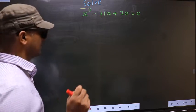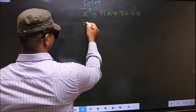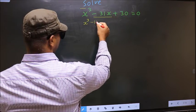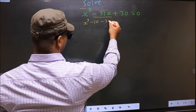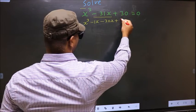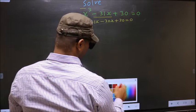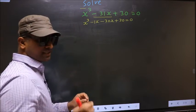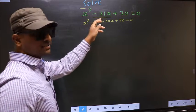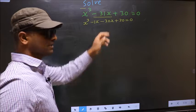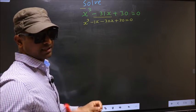What I mean is, x cube in place of minus 31x, now I write minus 1x minus 30x plus 30 equal to 0. Did you understand? In place of minus 31x I have written minus 1x minus 30x.